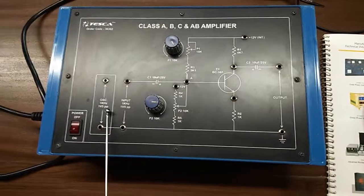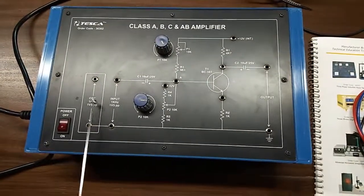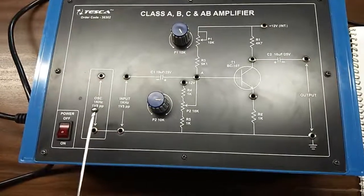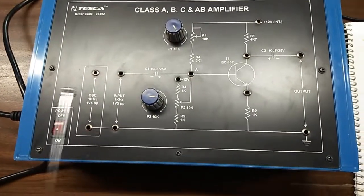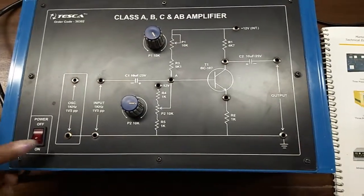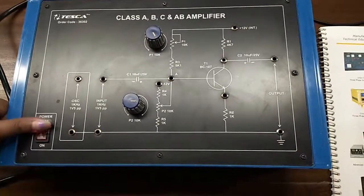This is the oscilloscope with 1 kilohertz sine wave and 1.5 peak to peak voltage. This is inbuilt. This is the input part, this is the output part, and this is the main switch to turn on or off the kit.